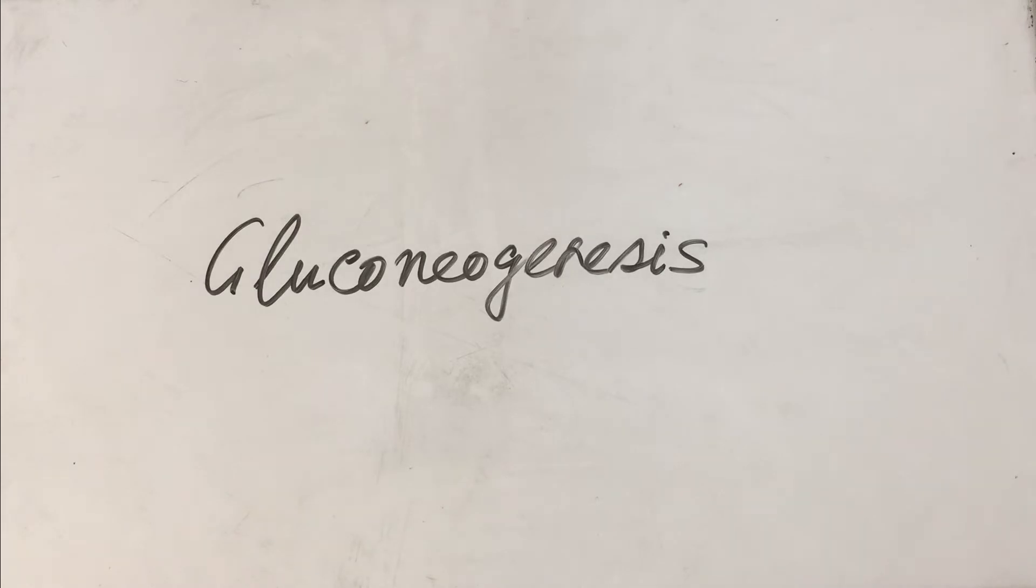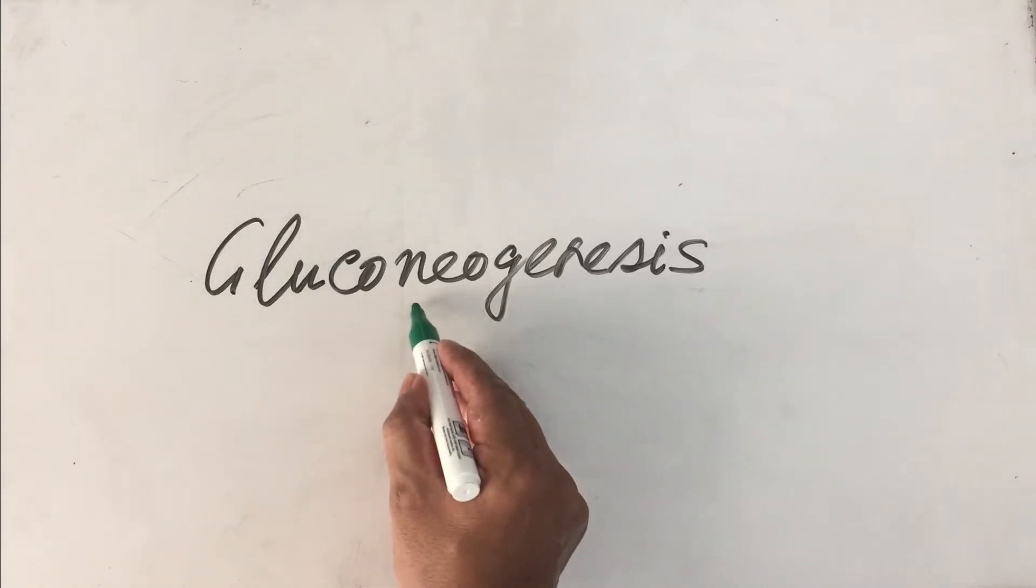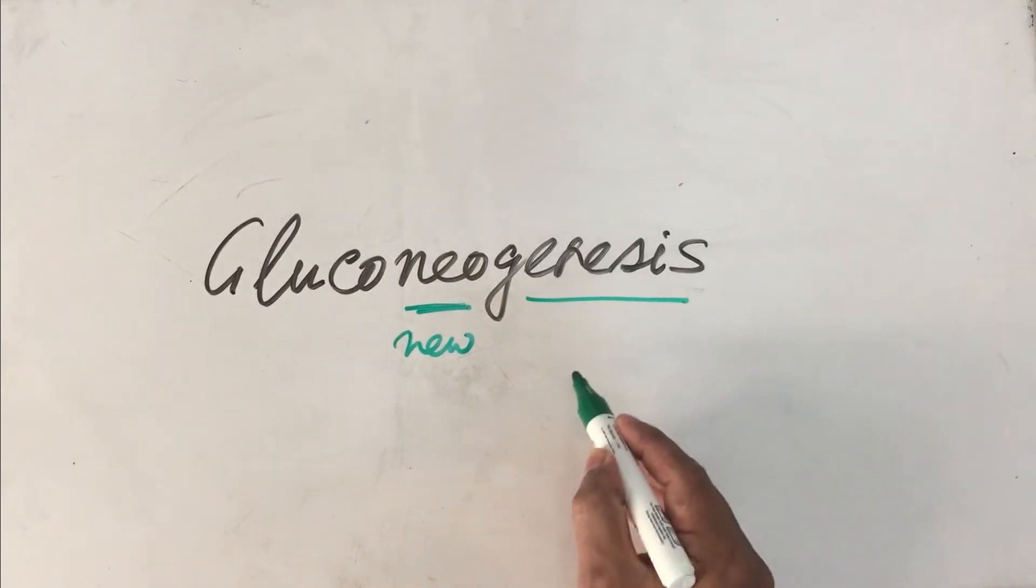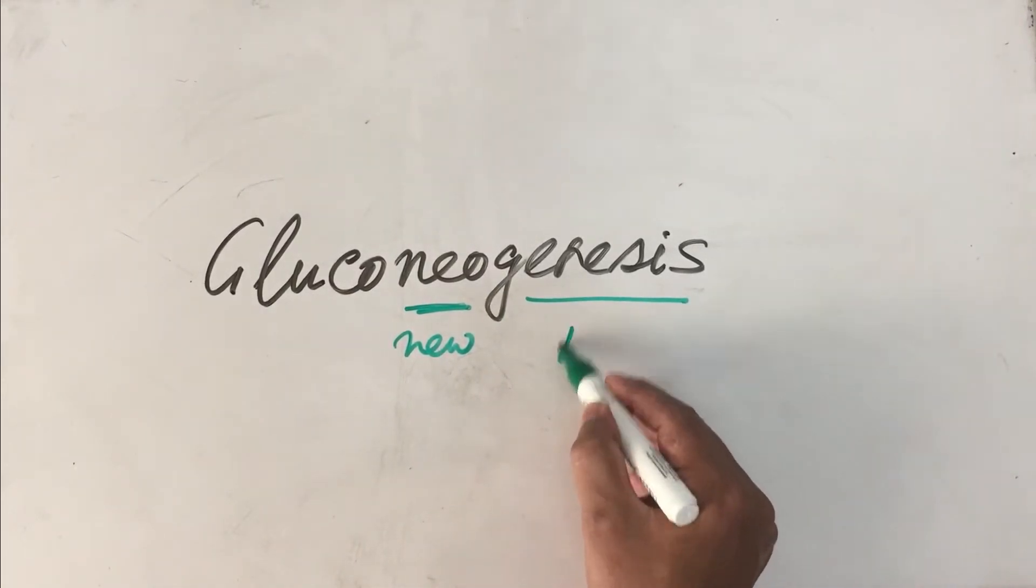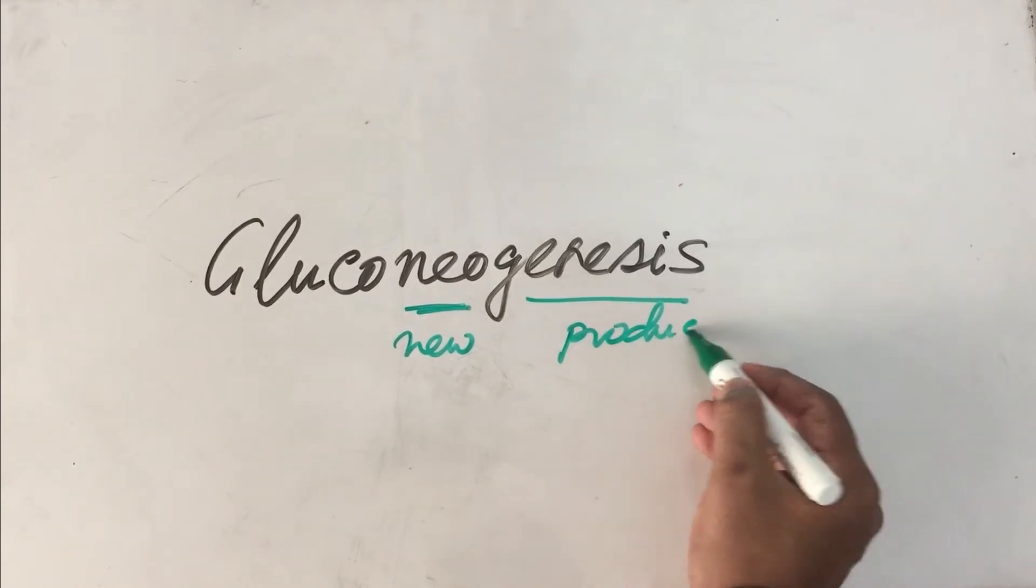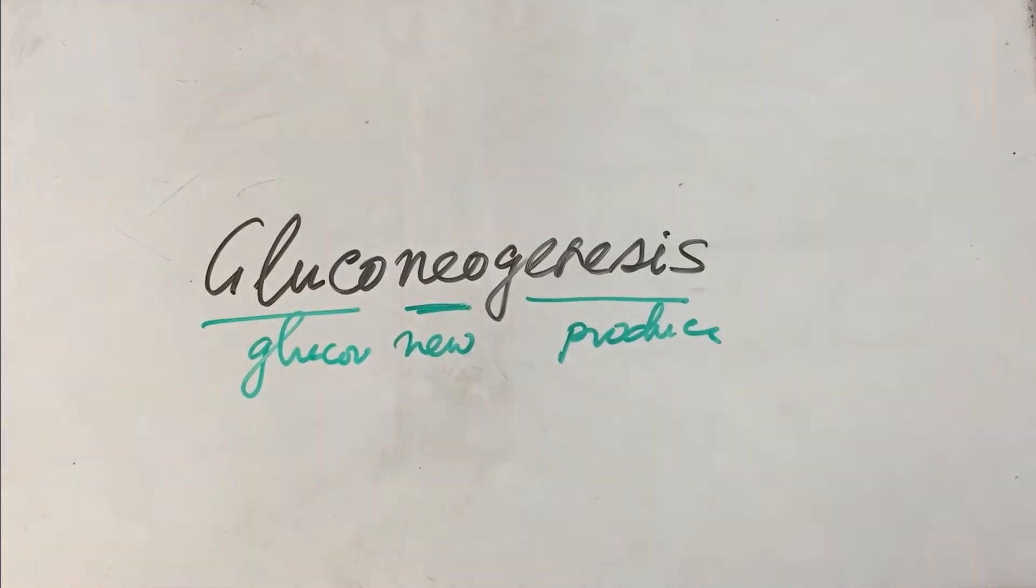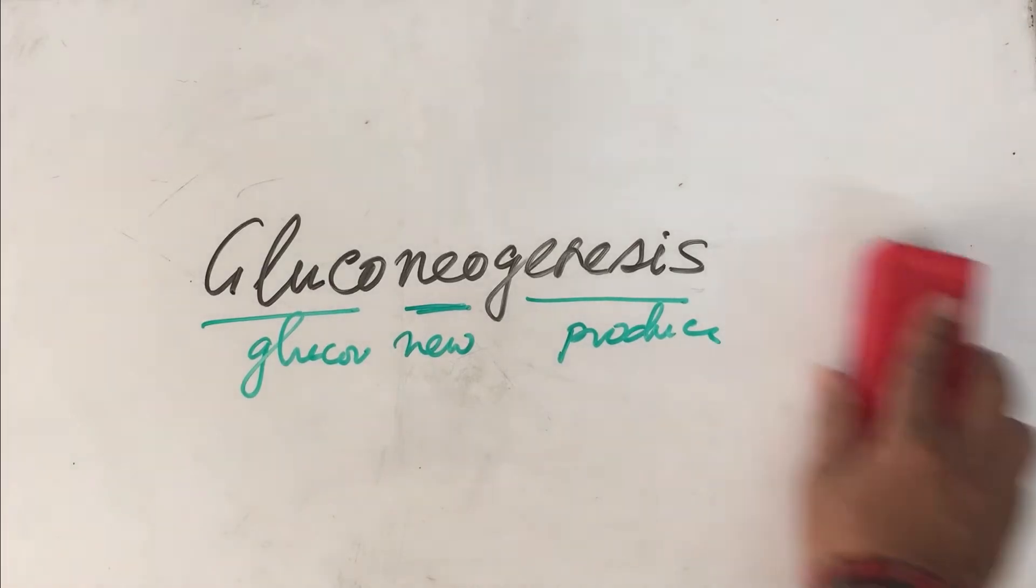The word gluconeogenesis means - neo means new, genesis means to synthesize or produce, glucose is glucose. So gluconeogenesis is synthesizing new glucose.